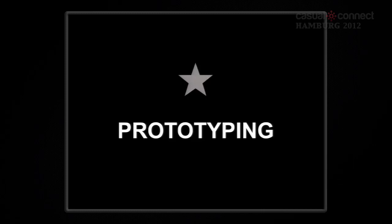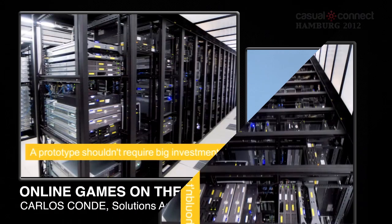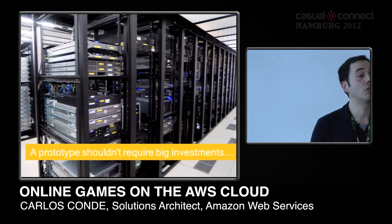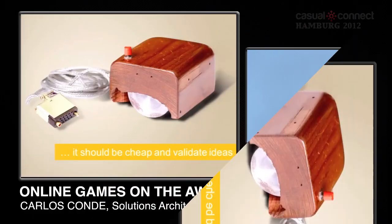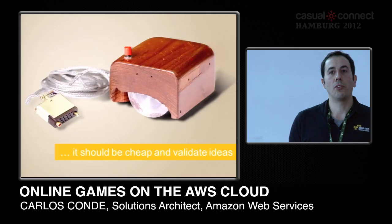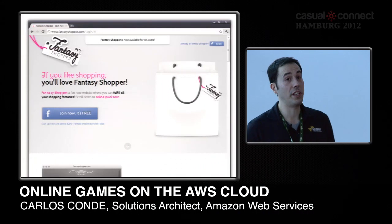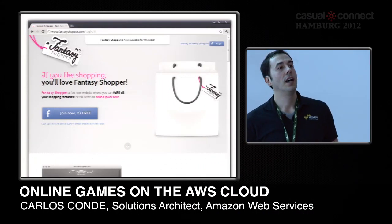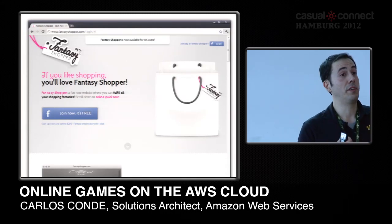Another main benefit of the Amazon cloud is rapid prototyping. If you have a game, you don't want to buy hardware or real physical capacity just to get started — you want to do a quick, inexpensive prototype to test ideas. This is how Fantasy Shopper got started. Fantasy Shopper is an online shopping game for iPhone and iPad. They started with a simple prototype and released it very quickly.